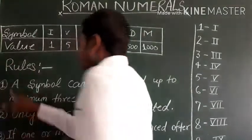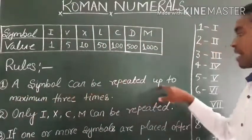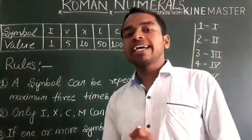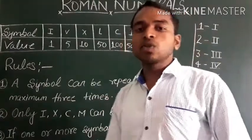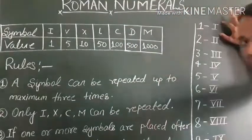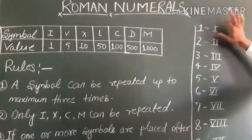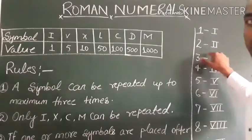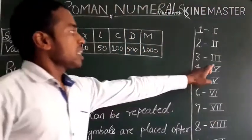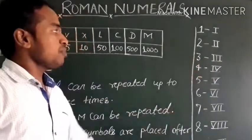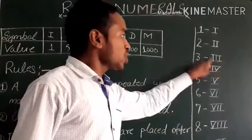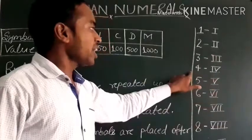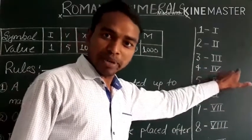Rule number 1: A symbol can be repeated back-to-back up to a maximum of 3 times. For example, I is 1, II is 2, and III is 3 — that is, I repeated three times. But IIII, which is I repeated 4 times, is not allowed.